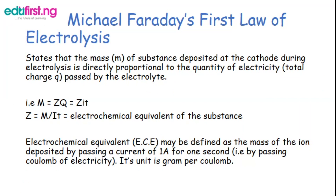Michael Faraday's First Law of Electrolysis states that the mass (m) of the substance deposited at the cathode during electrolysis is directly proportional to the quantity of electricity or total charge (Q) passed through the electrolyte. This can be expressed mathematically as: m = zQ, and since Q = It, we get m = zIt.